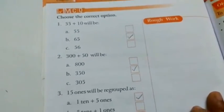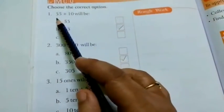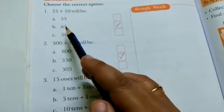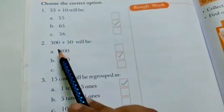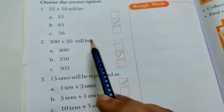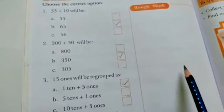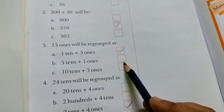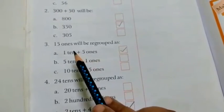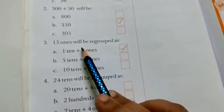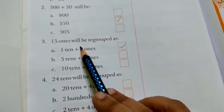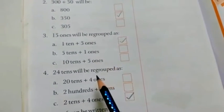Now here MCQ questions are there. 55 plus 10, that will be? Yes, 65 answer. 300 plus 50 is 350. 15 ones will be regrouped as? 1 ten plus 5 ones is equal to 15 ones.